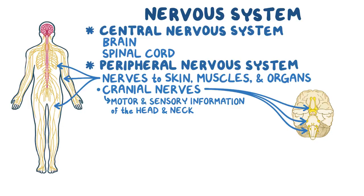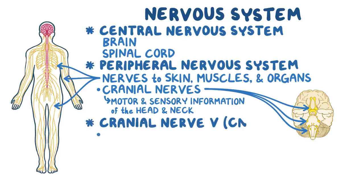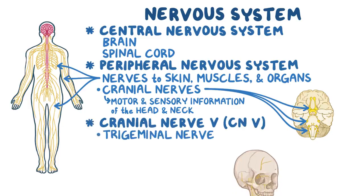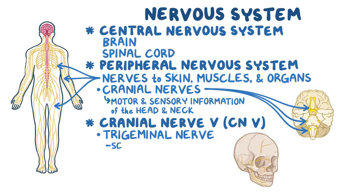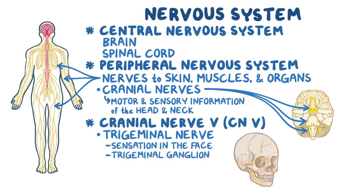A specific cranial nerve, cranial nerve 5, is the trigeminal nerve, and it's responsible for the sensation in the face. Its sensory neurons create a nerve cell cluster called the trigeminal ganglion, located in the bones on the side of the face between the eyes and ears.